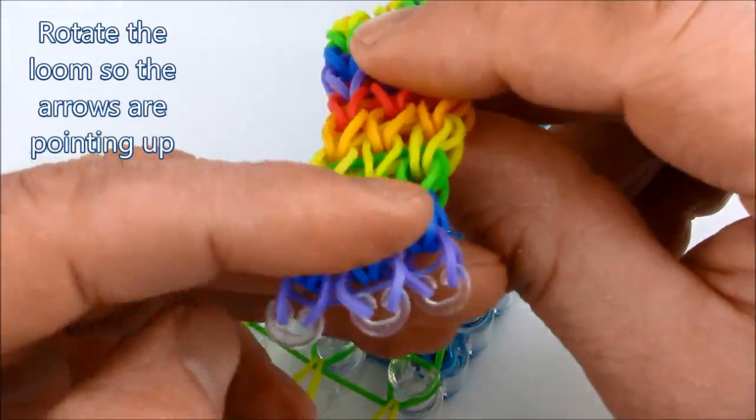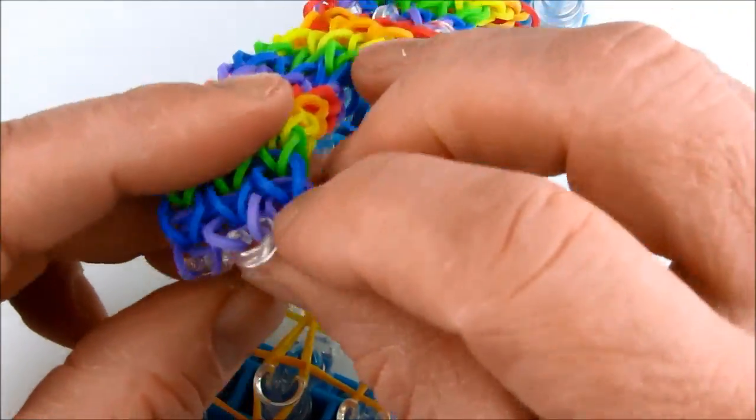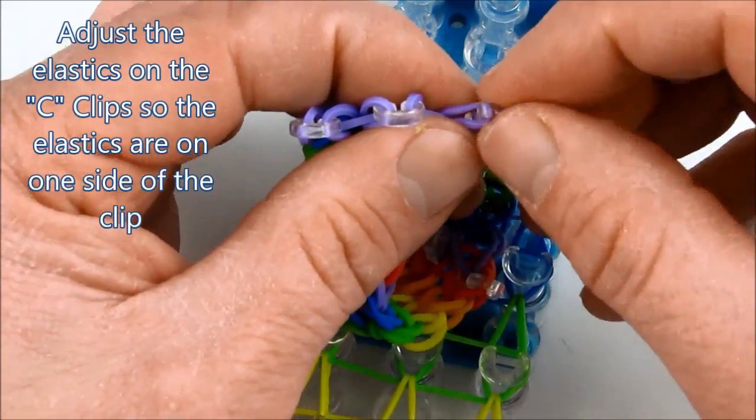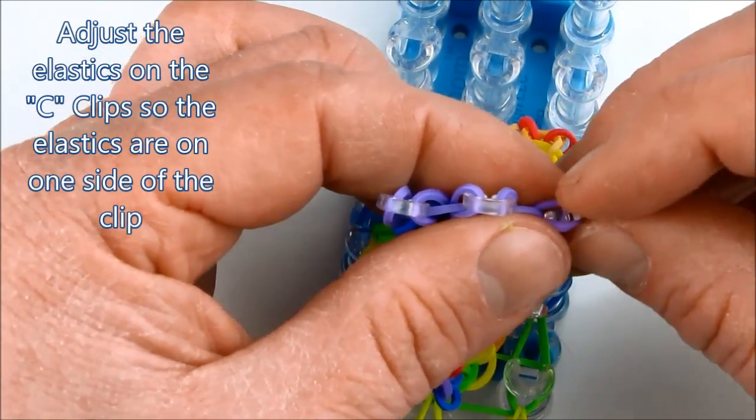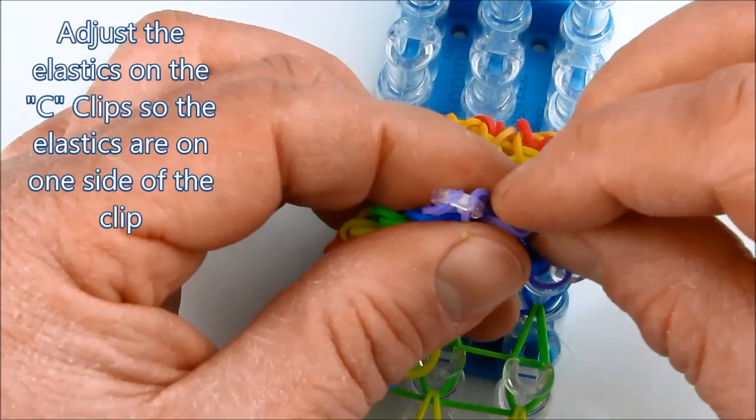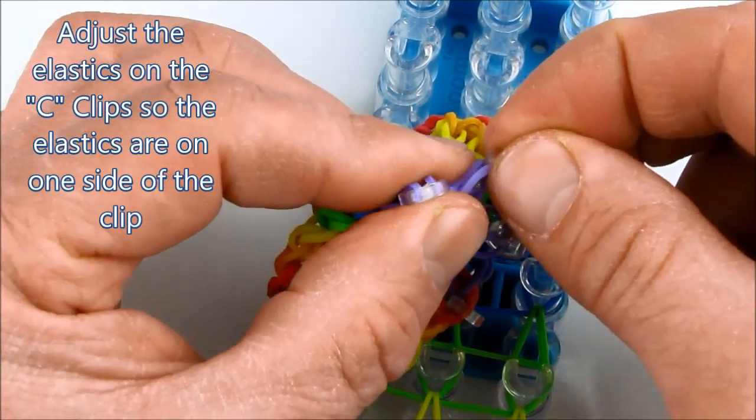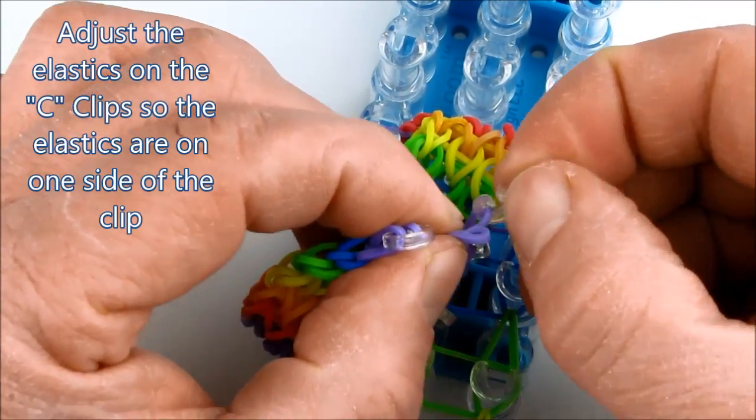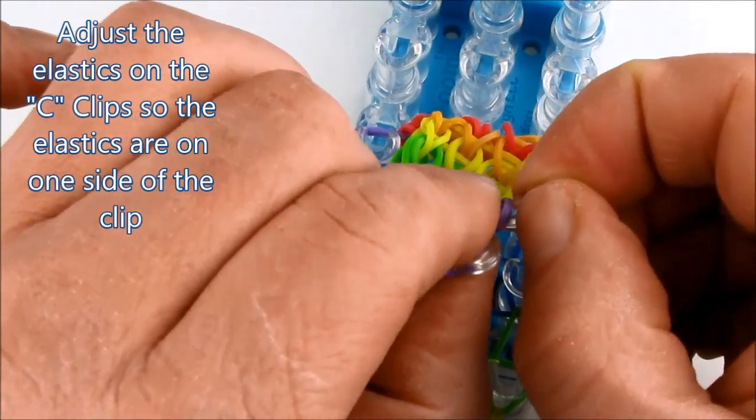Now adjust the elastics on the c-clips so that the elastics are on one side of the clip. Oh, that one came off there, we'll put it back on.